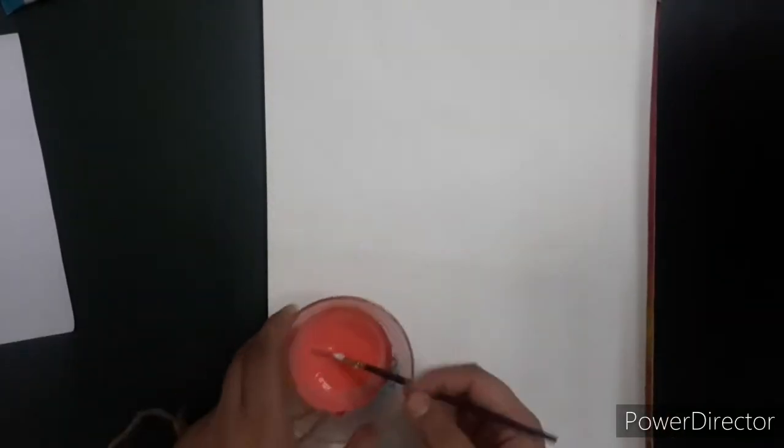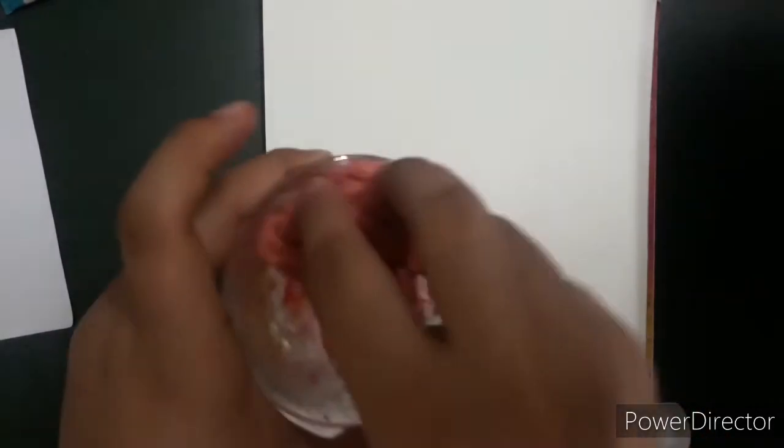So here I have pink color. Now I will dip this thread in this. Now here is a thread which I have fully covered in the paint nicely like this.